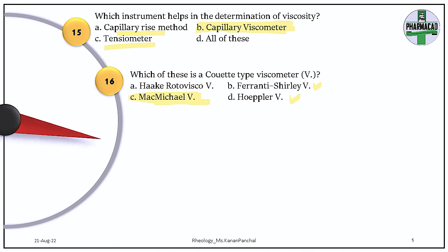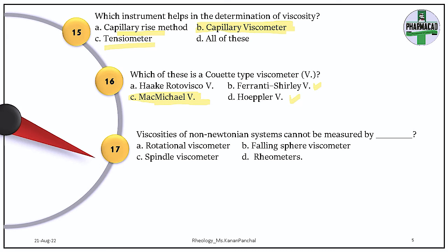Question 17. Viscosities of non-Newtonian systems cannot be measured by which instrument? Rotational viscometers, spindles, and rheometers can measure non-Newtonian systems — rotational and spindle types are rheometers meant for non-Newtonian systems. The answer is B — the falling sphere viscometer cannot measure non-Newtonian systems. It is used for Newtonian systems.